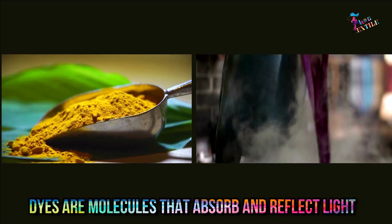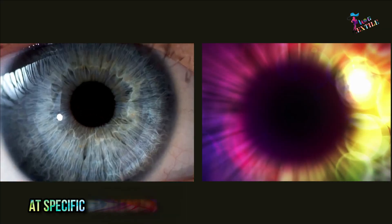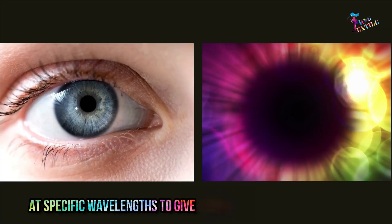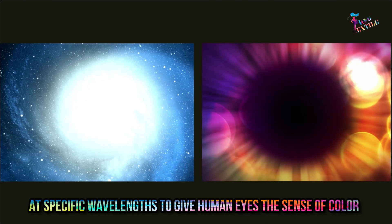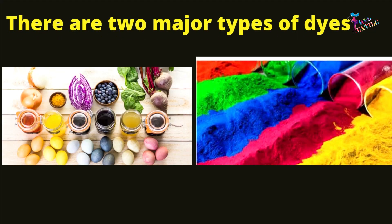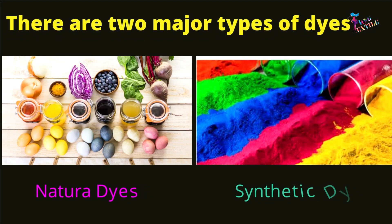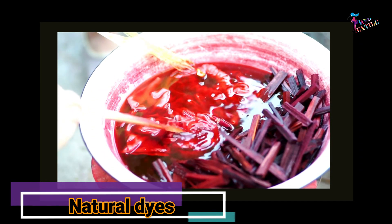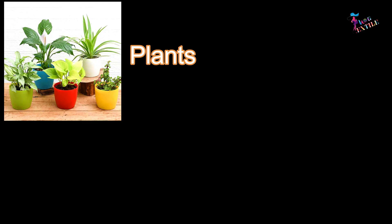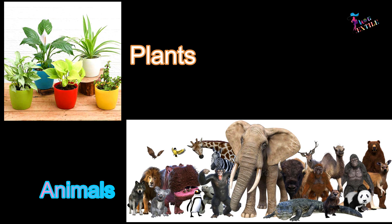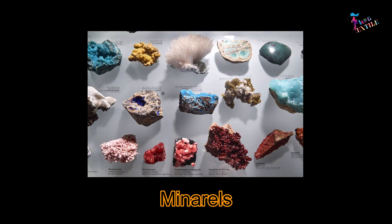Dyes are molecules that absorb and reflect light at a specific wavelength to give human eyes the sense of color. There are two major types of dyes: natural and synthetic. Natural dyes are extracted from natural substances such as plants, animals, or minerals.